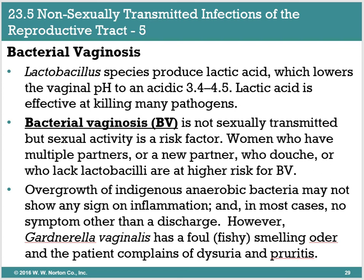In most cases of bacterial vaginosis, the primary symptom is discharge. If Gardnerella vaginalis is causing the bacterial infection, the patient will have a foul odor and may also report pain while urinating or severe itching in the vaginal region. A hallmark sign of bacterial vaginosis is the foul-smelling discharge.